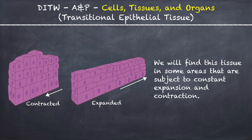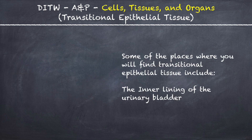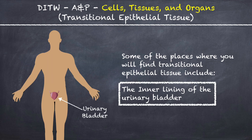We will find this tissue in some areas that are subject to constant expansion and contraction. Some of the places where you will find Transitional Epithelial Tissue include the inner lining of the urinary bladder.